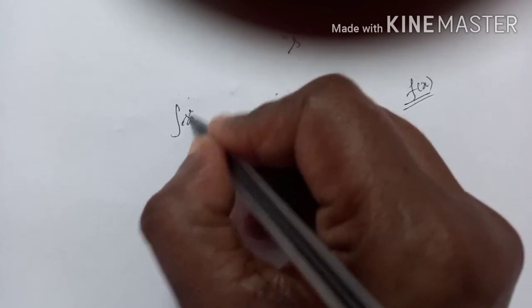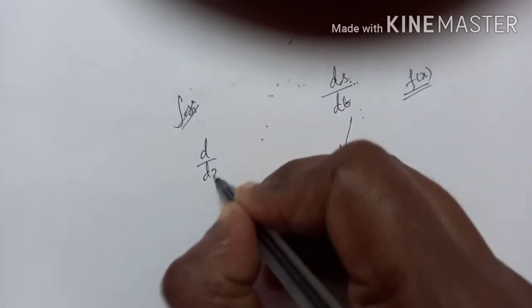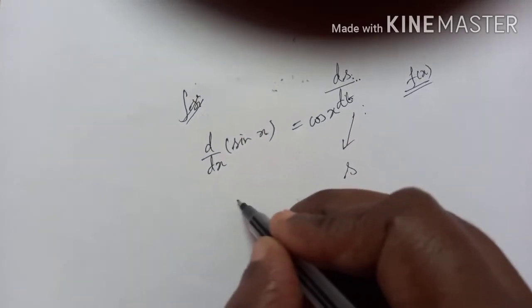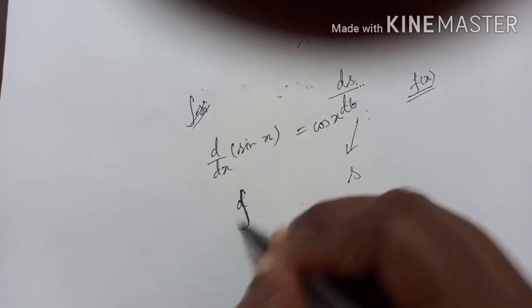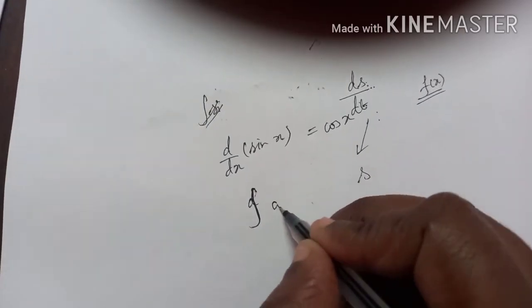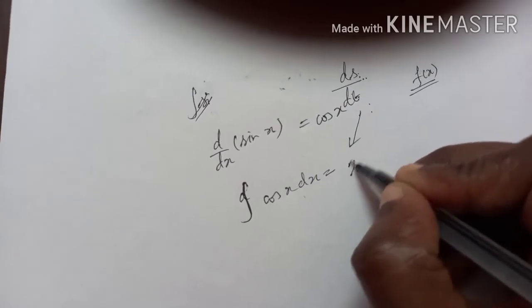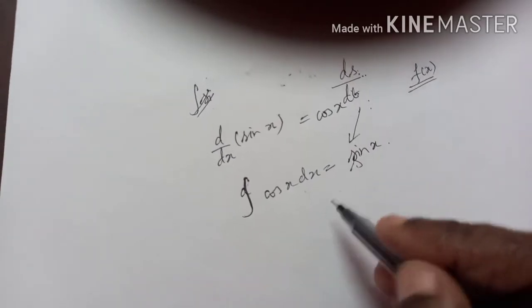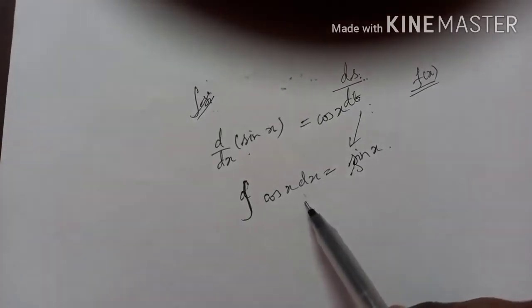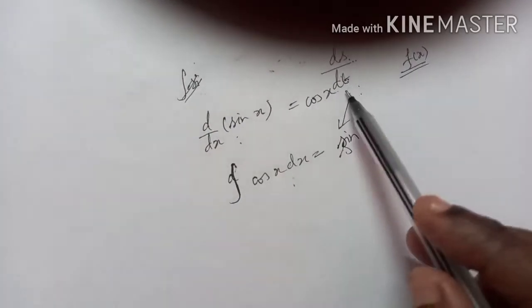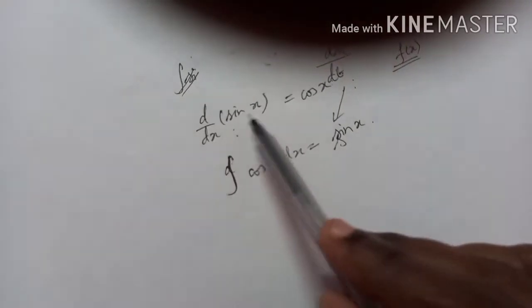For example, let us consider differentiation. Differentiation of sin x is cos x. Now let us take integration of cos x. What is the integration of cos x? It is sin x. You can see it is the reverse process. Integration is the reverse of differentiation. Differentiation of sin x is cos x, and integration of cos x is sin x.